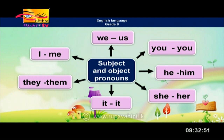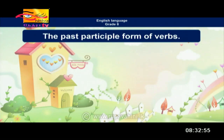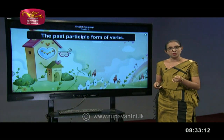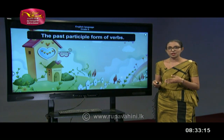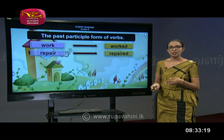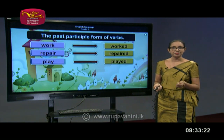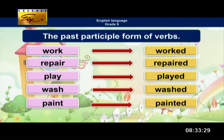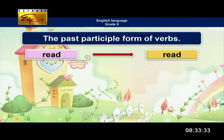Then the past participle form of verbs — remember children, we have regular verbs and irregular verbs. In regular verbs we add 'ed' to form the past participle, but in irregular verbs a new word comes. Work → worked, repair → repaired, play → played, wash → washed, paint → painted. Read → read. Remember children, the same spellings but different pronunciation when it comes to the past participle form.